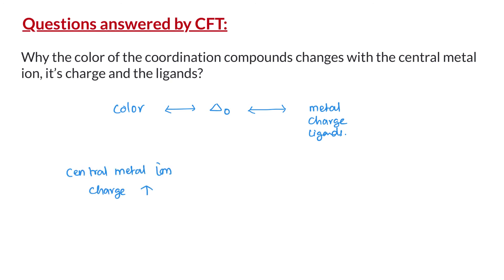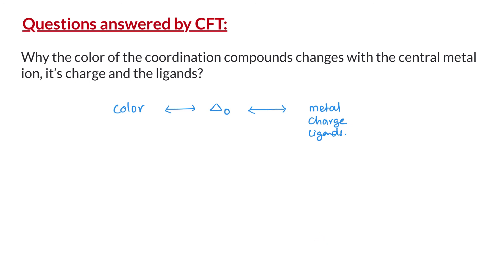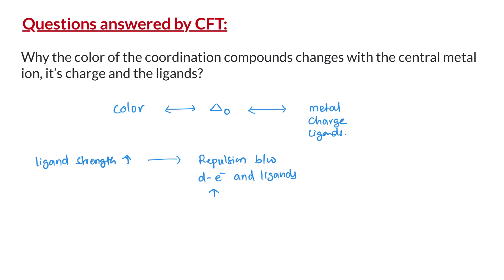In terms of charge: as the positive charge on the central metal ion increases, the ligands move closer, which increases the repulsion between the ligands and d orbitals. As a result, the crystal field splitting energy increases and the wavelength of the color absorbed decreases. In terms of ligands: as the field strength of the ligand increases, the repulsion between the ligands and d orbitals increases. As a result, the crystal field splitting energy increases and the wavelength of the color absorbed decreases.